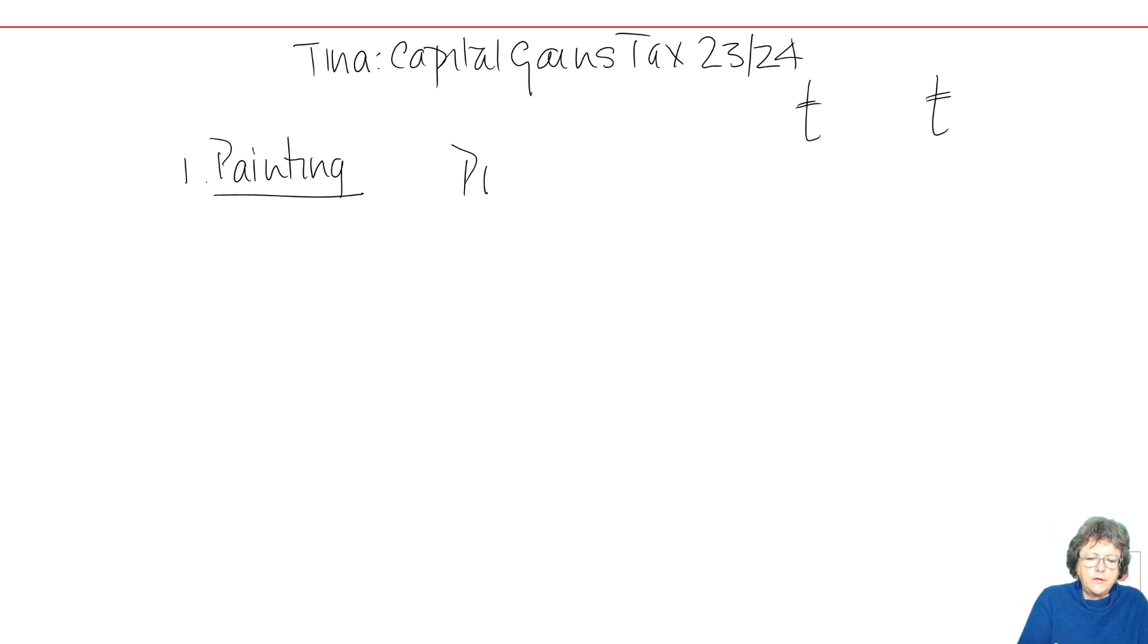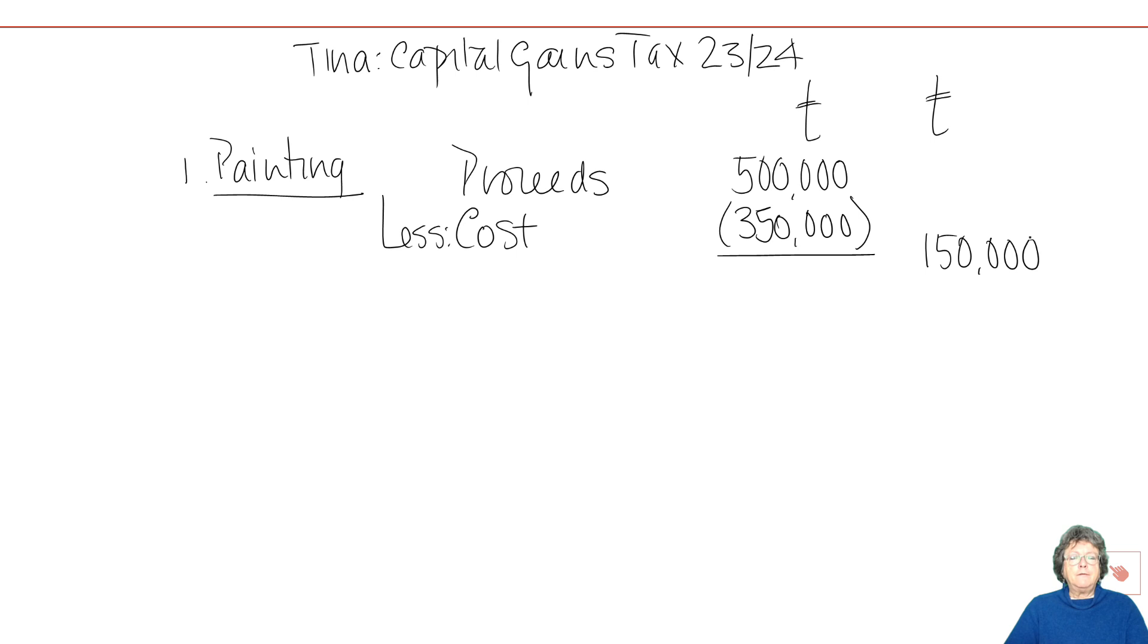So the proceeds for this were £500,000 and the cost was £350,000 and you'll notice I'll put that in the first column that's kind of my working column and I'm going to put the answer in the end. So that's one option that you have, either that or you could do all of them as little workings and then bring the answers all together.